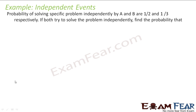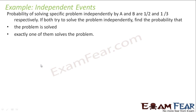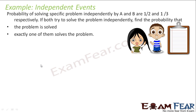Next problem: the probability of solving a specific problem independently by A and B are 1/2 and 1/3 respectively. If both tried to solve the problem independently, find the probability that the question is solved and that exactly one of them solved the problem. So we have two people, A and B. Probability that A solves it is 1/2 and probability that B solves it is 1/3.